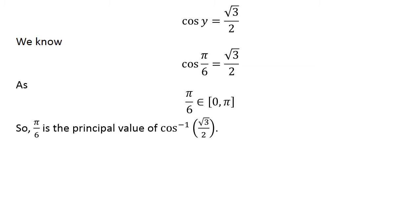So, pi upon 6 is the principal value of inverse cosine of square root of 3 upon 2.